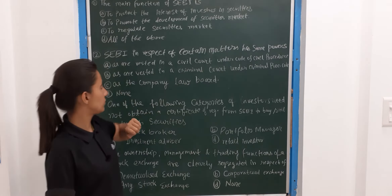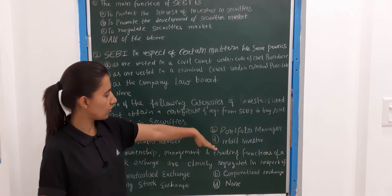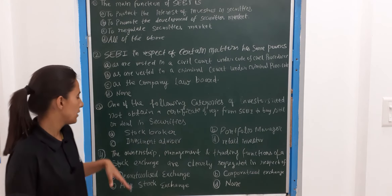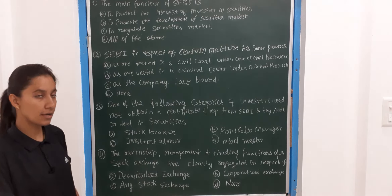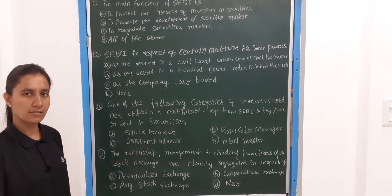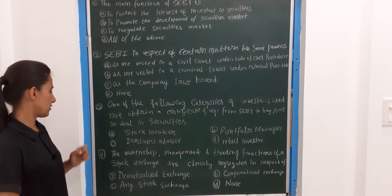Third question: one of the following categories of investors need not obtain a certificate of registration from the Securities and Exchange Board of India to buy or deal in securities — A option is stockbroker, B is portfolio manager, C is investment advisor, D is retail investor. The correct answer here is retail investor.